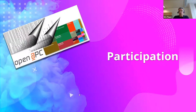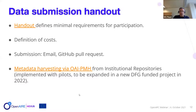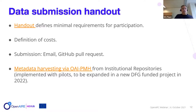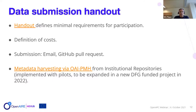This deals with the question of how to participate in Open APC. We want to convince those who are not yet part of the project to join the community. When you receive the slides you can click on the links for a detailed handout describing how to participate and the requirements for the data. We've learned through many discussions how to define the costs of open access publishing, how to deal with discounts and taxes — all described in detail on the website. There are two ways to deliver data: one is to deliver a CSV file by email, which is preferred by most data providers.